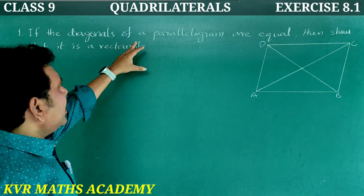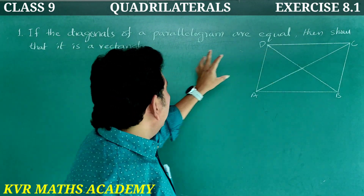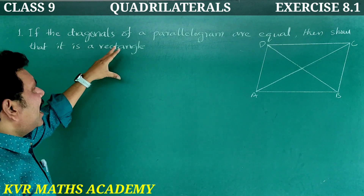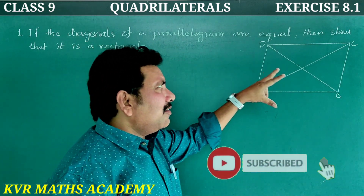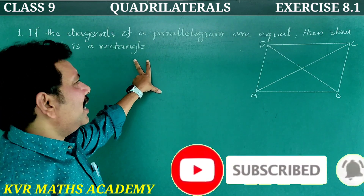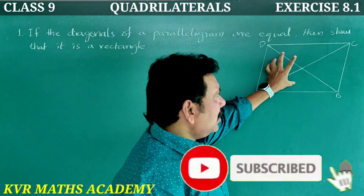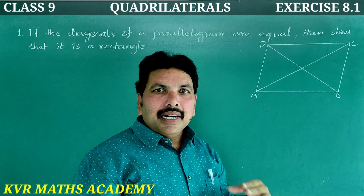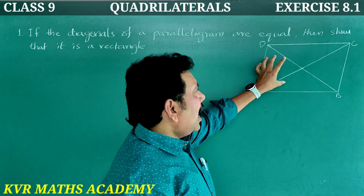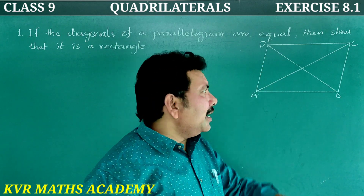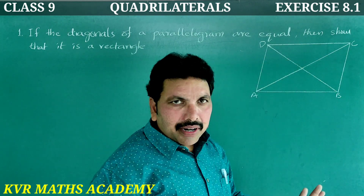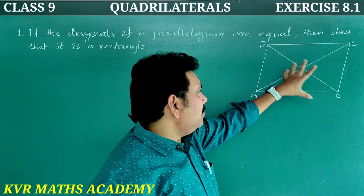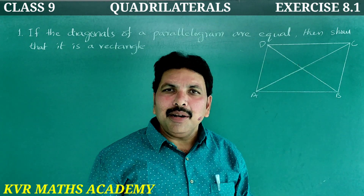First question: If the diagonals of a parallelogram are equal, then show that it is a rectangle. So ABCD is a parallelogram where diagonal AC is equal to diagonal BD, and we need to prove that ABCD is a rectangle.